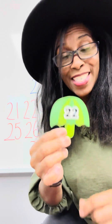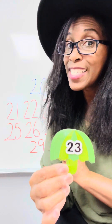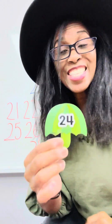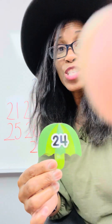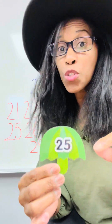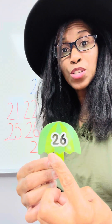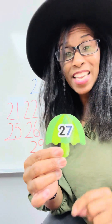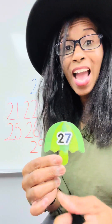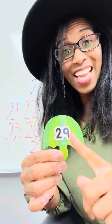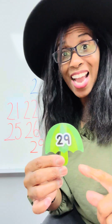A 2 and a 3 is a 23. A 2 and a 4 is a 24. A 2 and a 5 is a 25. A 2 and a 6 is a 26. A 2 and a 7 is a 27. A 2 and an 8 is a 28. And a 2 and a 9 is a 29.